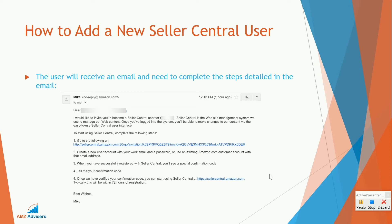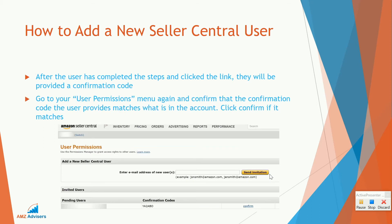They're going to need to follow the steps in that email, click through the link to accept the access, and they'll receive a confirmation code. They need to give that confirmation code to you as the account owner. You'll verify that code against what you see here in confirmation codes — make sure it matches, and if it does, click confirm. You don't necessarily need to do this step, but if you want that extra security, just make sure everything matches and click confirm.